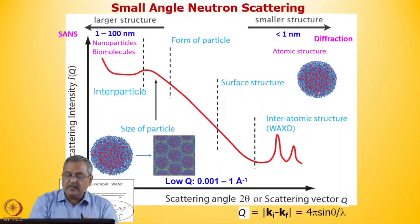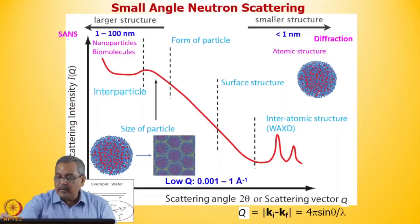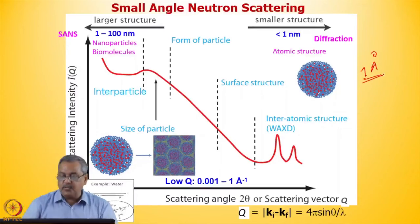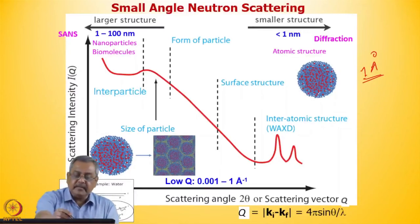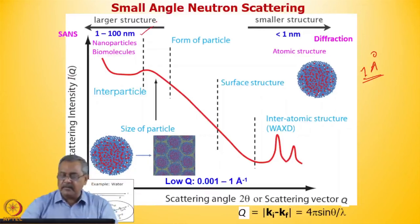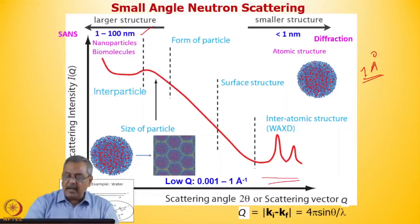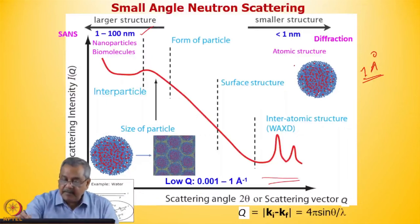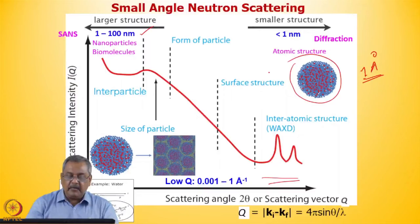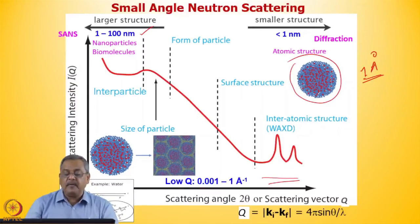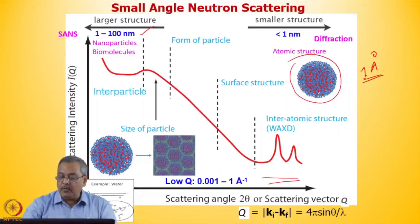In small angle neutron scattering, the length scale changes dramatically — from ~1 Å resolution in crystallography, we now look at sizes of 1 to 100 nm (up to ~1000 Å). SANS covers this entire range. Rather than the crystallographic structure, we look at inhomogeneities and their sizes in a medium. These mesoscopic length scales are of great interest in industry, chemistry, and biology, and SANS is an important tool for investigating them.